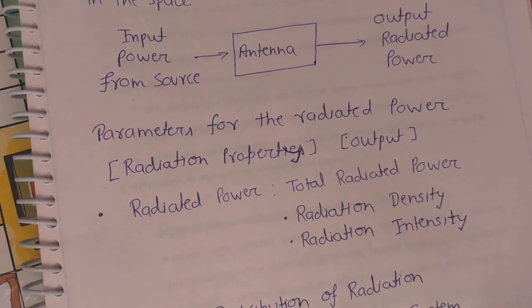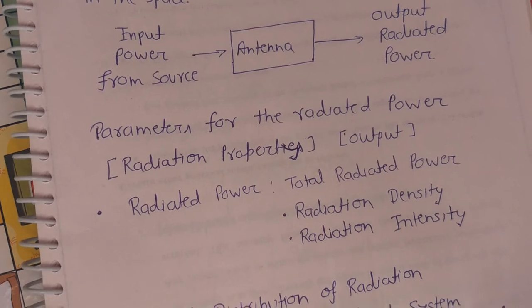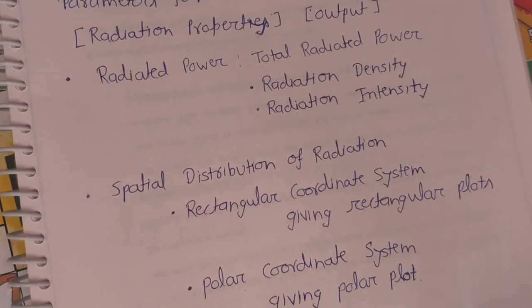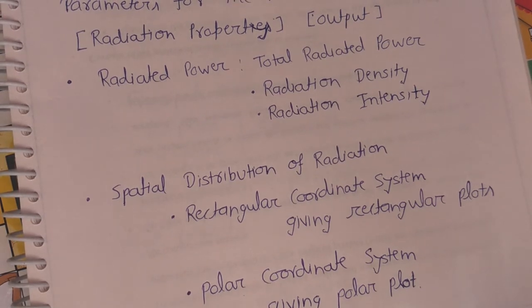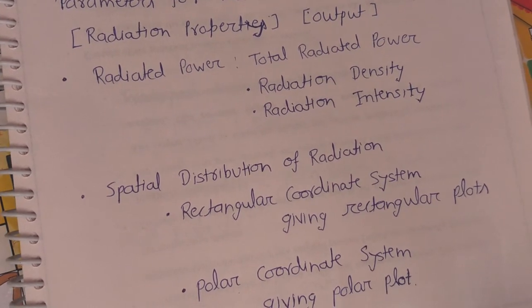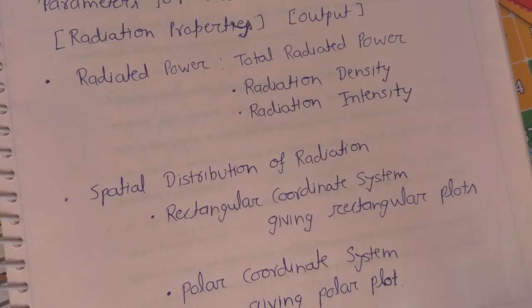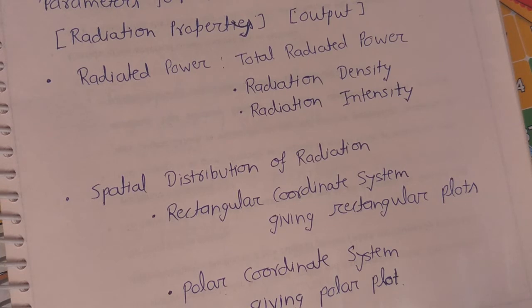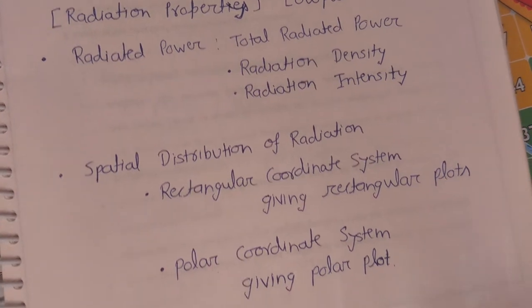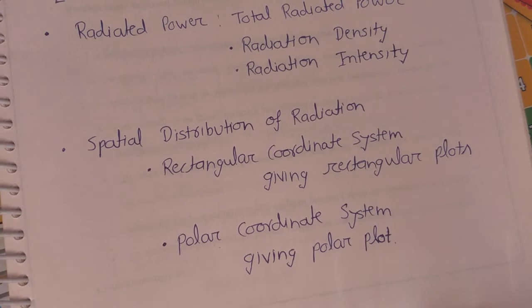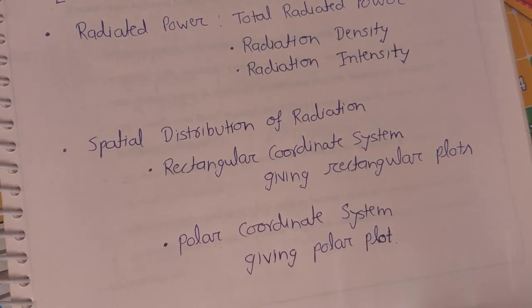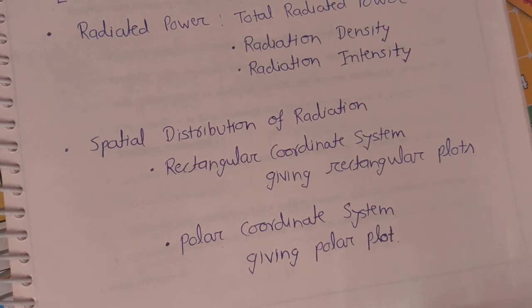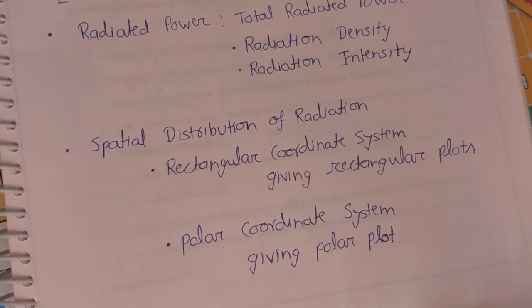The second category is the spatial distribution of radiation. We use two types of coordinate systems: number one is the rectangular coordinate system, which gives the information about rectangular plots or two-dimensional plots, and number two is the polar coordinate system, which gives the polar plot or radiation pattern of the given antenna system.